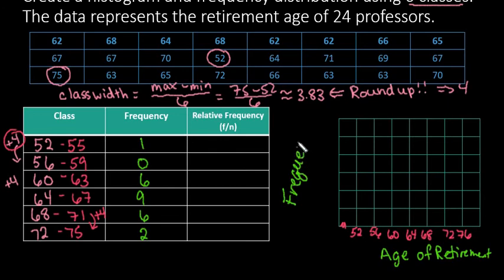You could do a relative frequency histogram too and label it as relative frequency. Going up to 9, I'll count by 2: 2, 4, 6, 8, and 10.